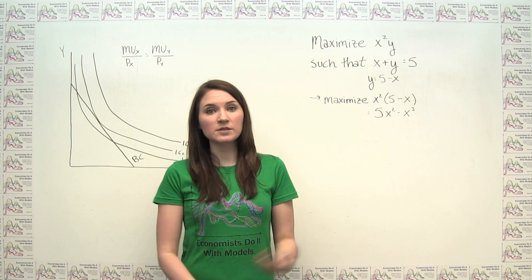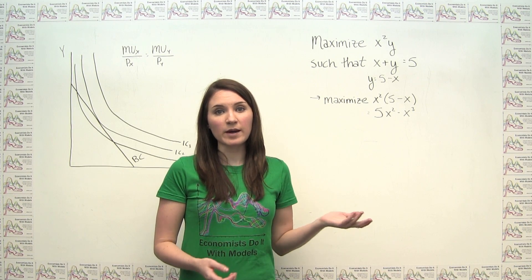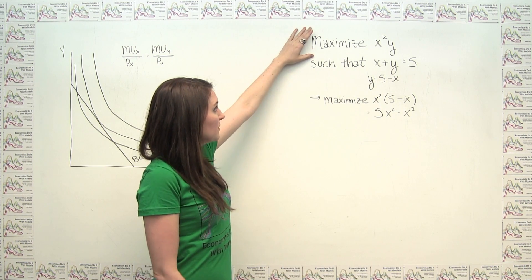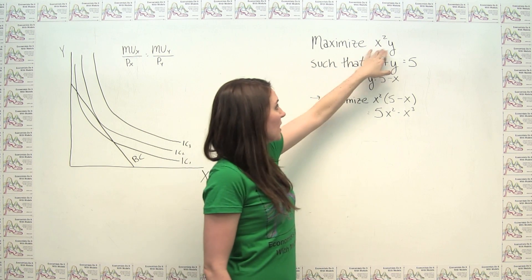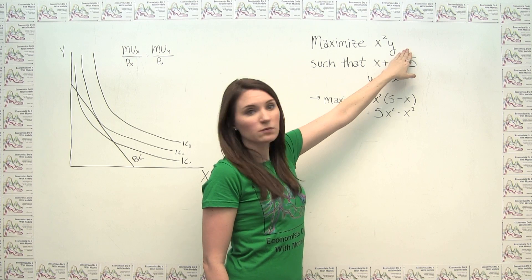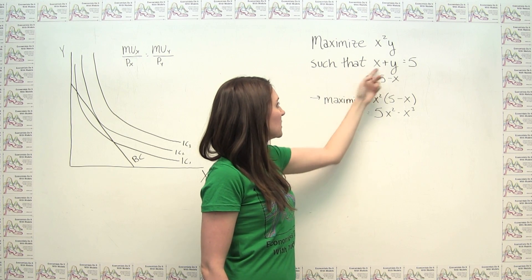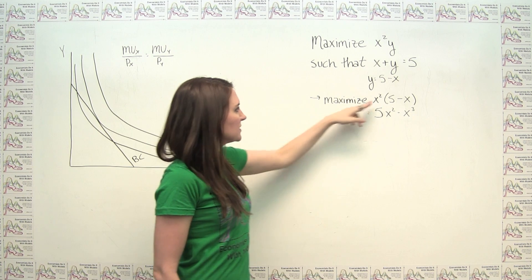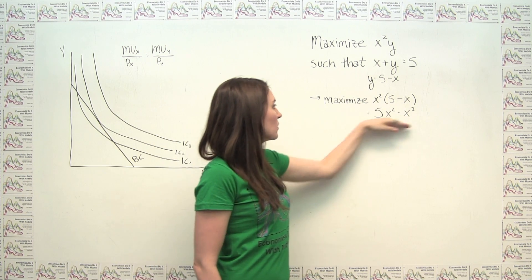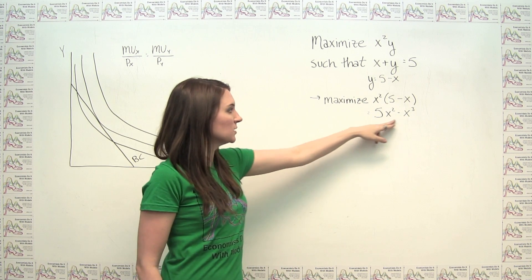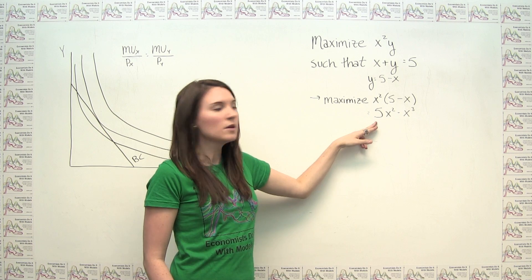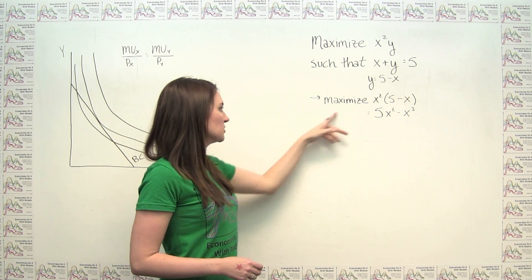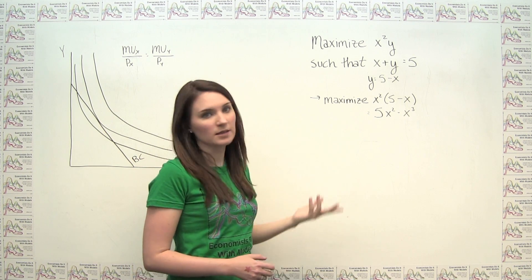Sometimes it's easy to do this using typical mathematical methods. For example, if we wanted to maximize the quantity x² times y subject to the constraint x plus y equals 5, we could simply solve for y, substitute it back in, and then have a normal function in one variable that we maximize by taking the derivative and setting it equal to zero.